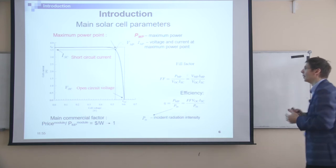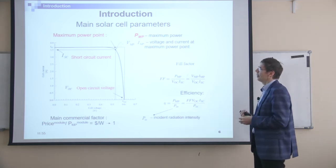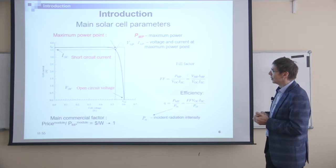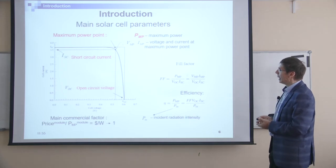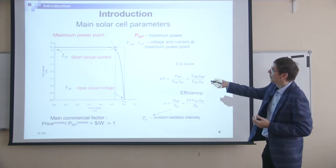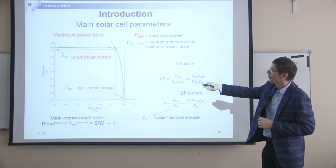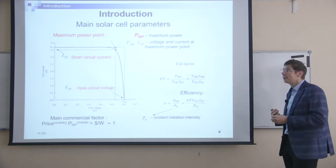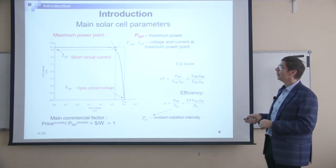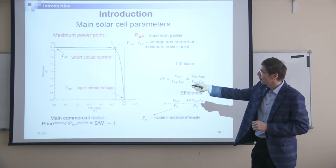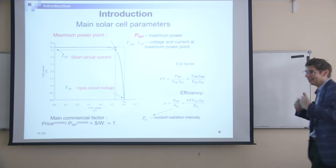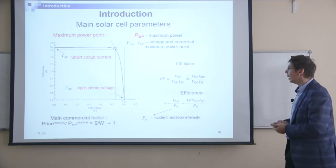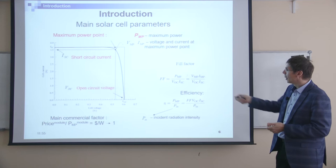100% fill factor cannot be achieved, but 90% is actually an achievable value. It depends — if you have a huge difference between the real IVQ and the ideal one, you can get around 50–60% fill factor. Sometimes you can get an IVQ which is even worse. Unfortunately in reality you can find it sometimes. Of course it means there is some problem with the solar cell, and it gives a quite low value of the fill factor.